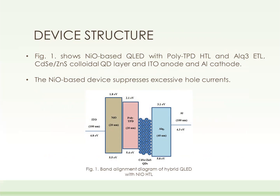This structure is preferred as the NiO-based device suppresses excessive hole current, which was the case when PEDOT:PSS and QPVK were used as the dual hole transport layer.